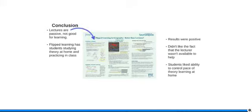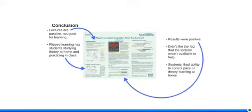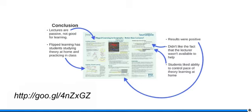To conclude: lectures on their own are passive and not very good for learning. Flip learning has students study theory at home and practice in class, and the results were very positive — the Likert questions showed that. Students didn't like the fact that the lecturer wasn't available to help, but they did like the ability to control the pace of theory learning at home and to control where they studied. If you visit the Prezi here, you can see the poster and explore it in detail.